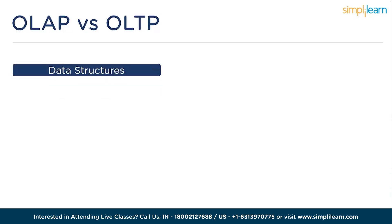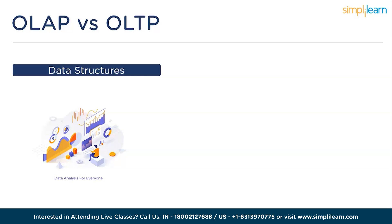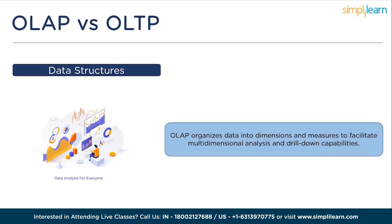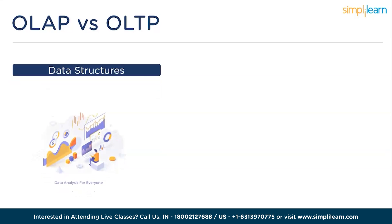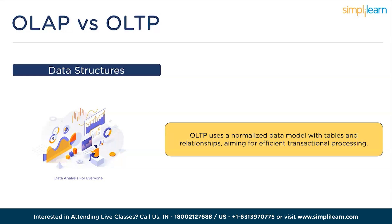Next is data structure. OLAP uses a multidimensional data model called a cube. It organizes data into dimensions, such as time, geography, and product, and measures, such as sales and profit, to facilitate multidimensional analysis and drill-down capabilities. OLTP uses a normalized data model with tables and relationships, aiming for efficient transaction processing. It minimizes data redundancy and ensures data consistency through the use of normalization techniques.